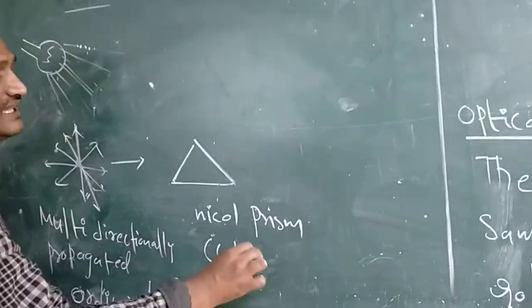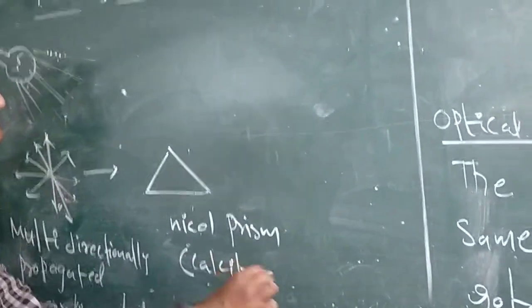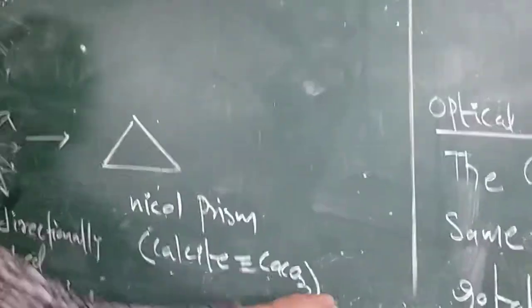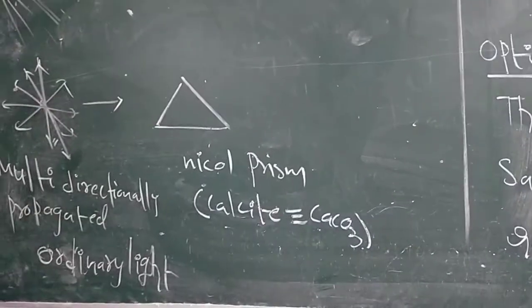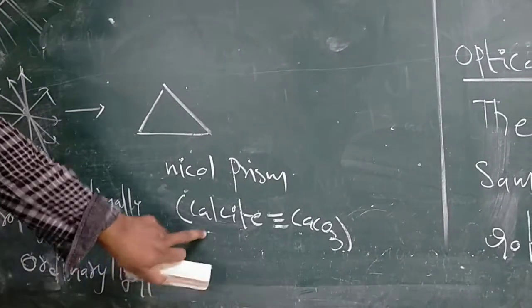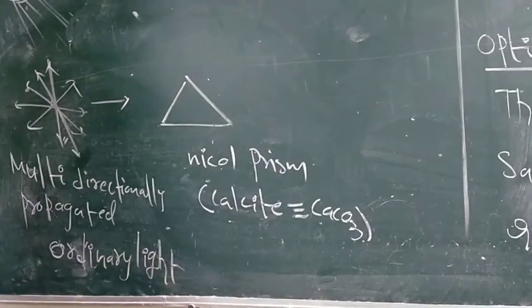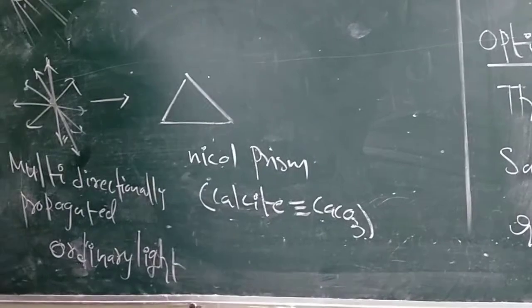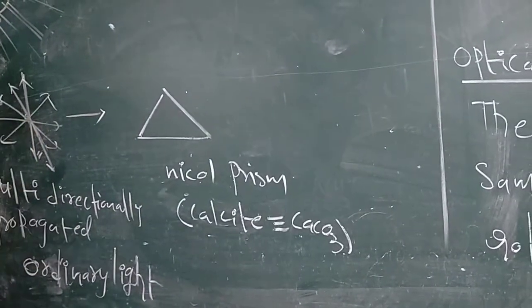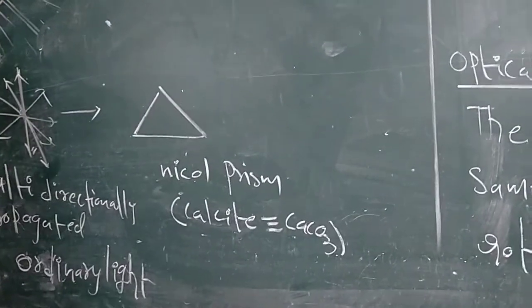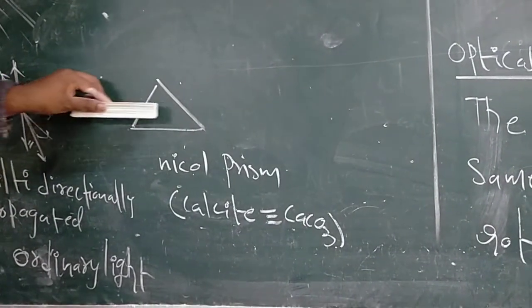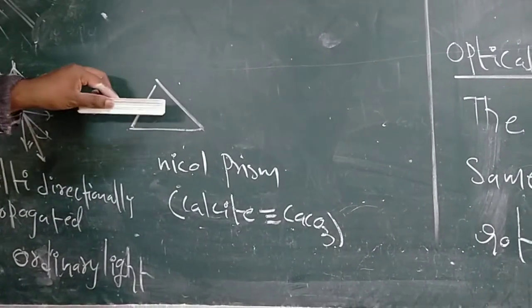The Nicol prism is made by calcite, which is equal to calcium carbonate (CaCO₃). Whenever the multidirectionally propagated ordinary light is passed through the Nicol prism, what comes out the other side changes.